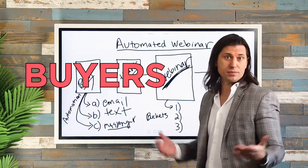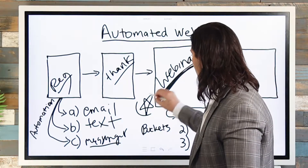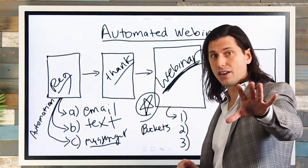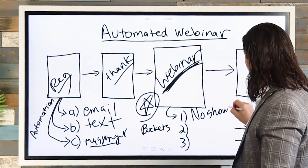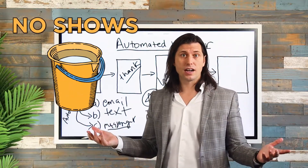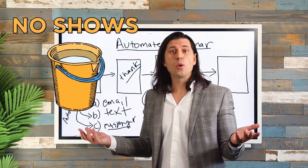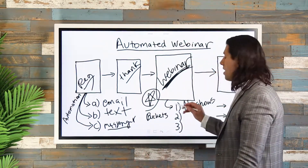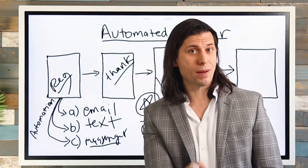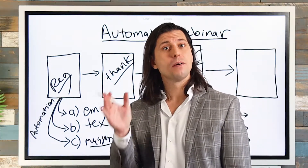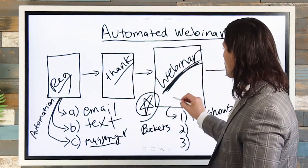The buckets you want to put people in: obviously there are the people that buy. Beyond the buyers, you have the no-shows, which will probably be your largest bucket — especially as you get started, this will likely be half or more than half of the people who register. The second group are people who start the webinar but then leave before your call to action. And the third group are people who actually saw your CTA but didn't buy.